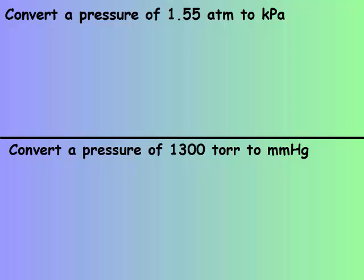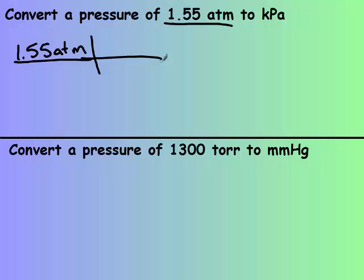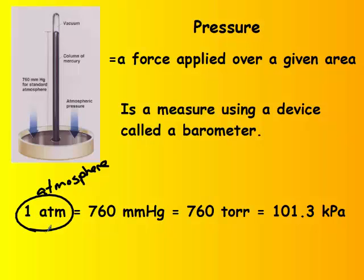Here we have a pressure of 1.55 ATM and we're converting to kPa. To do so, you start with the given and set up a dimensional analysis chart, so whatever unit is here has to go in the bottom, and what you're converting to goes on top. Looking at our conversions, 1 goes with ATM and 101.3 goes with kPa.